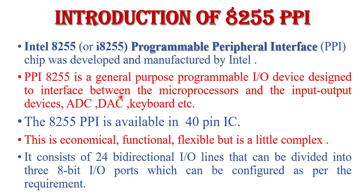Initially, Intel faced some difficulties in terms of interfacing with the 8085 or 8086, due to limited address bus or data bus. To increase the interfacing capability of microprocessors like 8085 and 8086, Intel designed an interfacing device called 8255. The main purpose of 8255 is to increase the interfacing capability of the microprocessor. 8255 PPI is available in a 40-pin IC — it is economical, flexible, versatile, and functional, but a little bit complex.